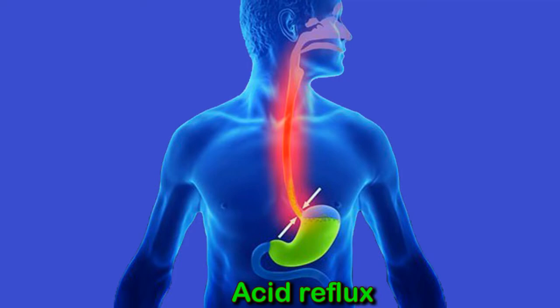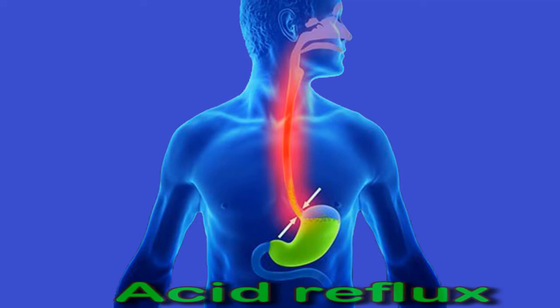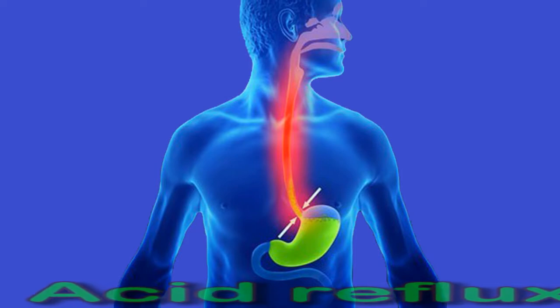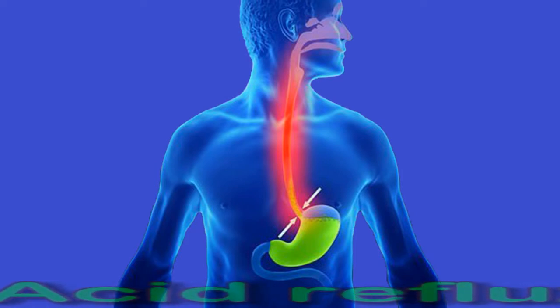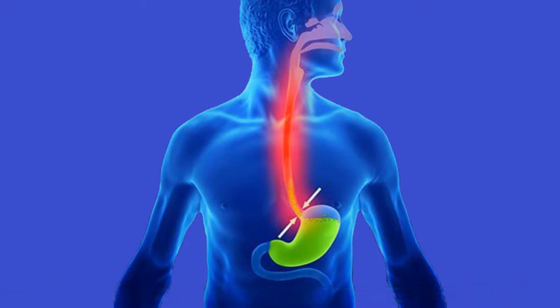GERD is a chronic condition that causes symptoms such as acid reflux, heartburn, nausea, pain when swallowing, regurgitation of food, a chronic cough, sore throat, and bad breath. Not everyone who has GERD experiences all of these symptoms, but they often worsen after meals or when lying down. People may take over-the-counter or prescription medications, or in some cases have surgery to prevent reflux. Seeking treatment is important, as GERD can increase the risk of other conditions such as strictures or esophageal cancer.